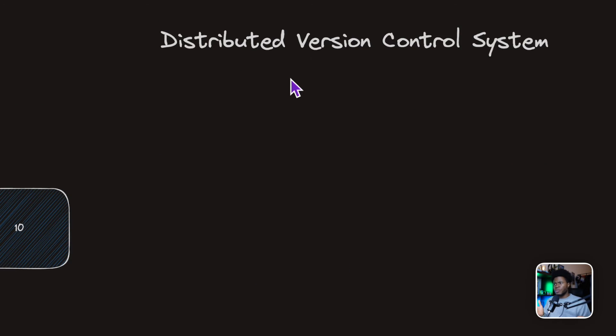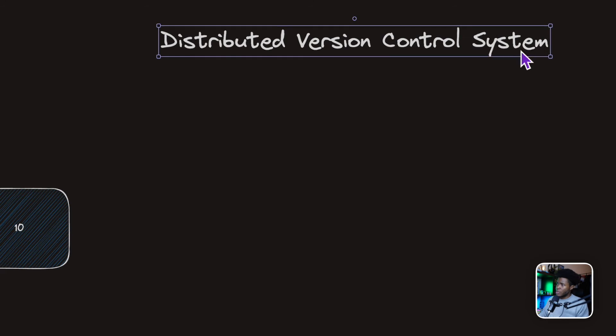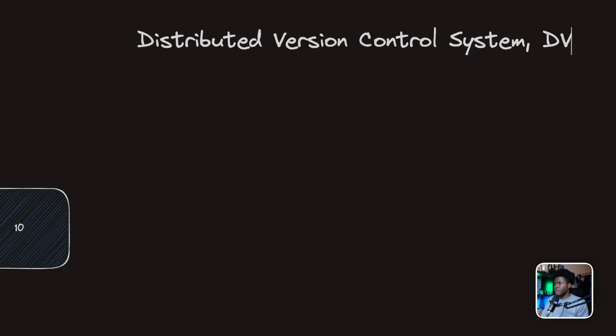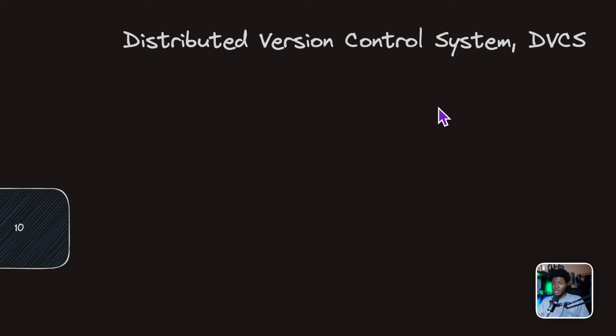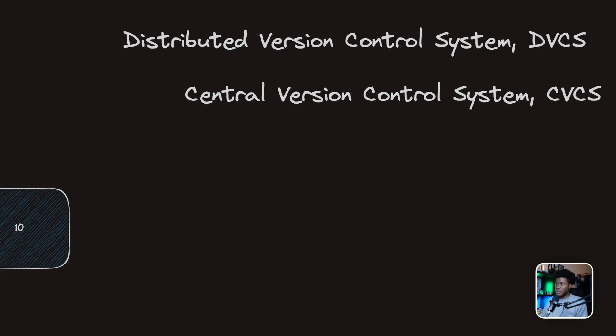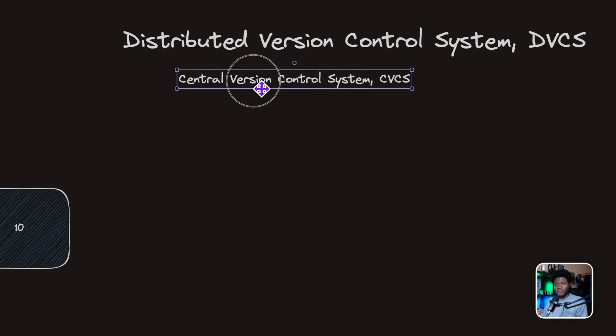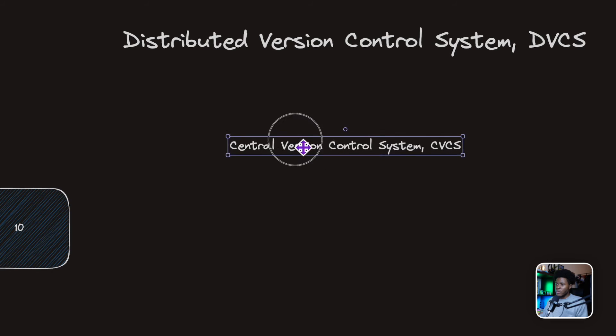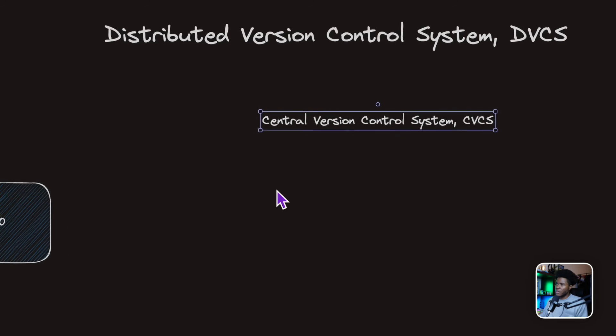So what about distributed version control system? The abbreviation is DVCS. Distributed version control system is the category of version control systems that Git falls under. The other category is central version control system, which is CVCS. How is central different from distributed? Let's see how central works first.